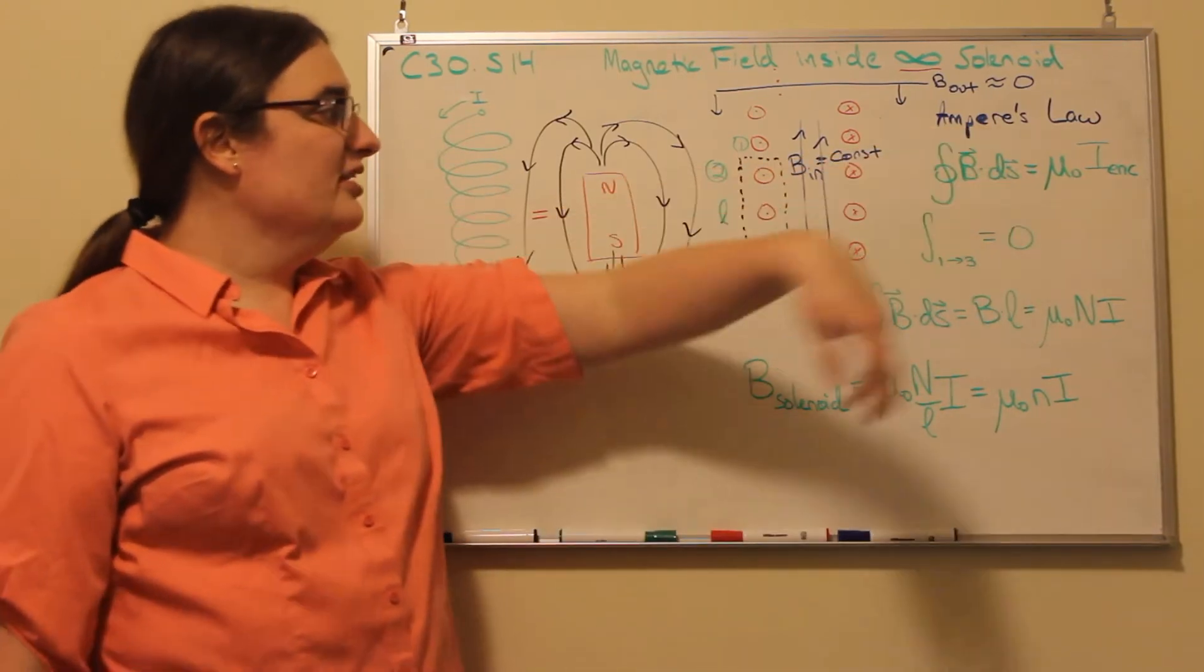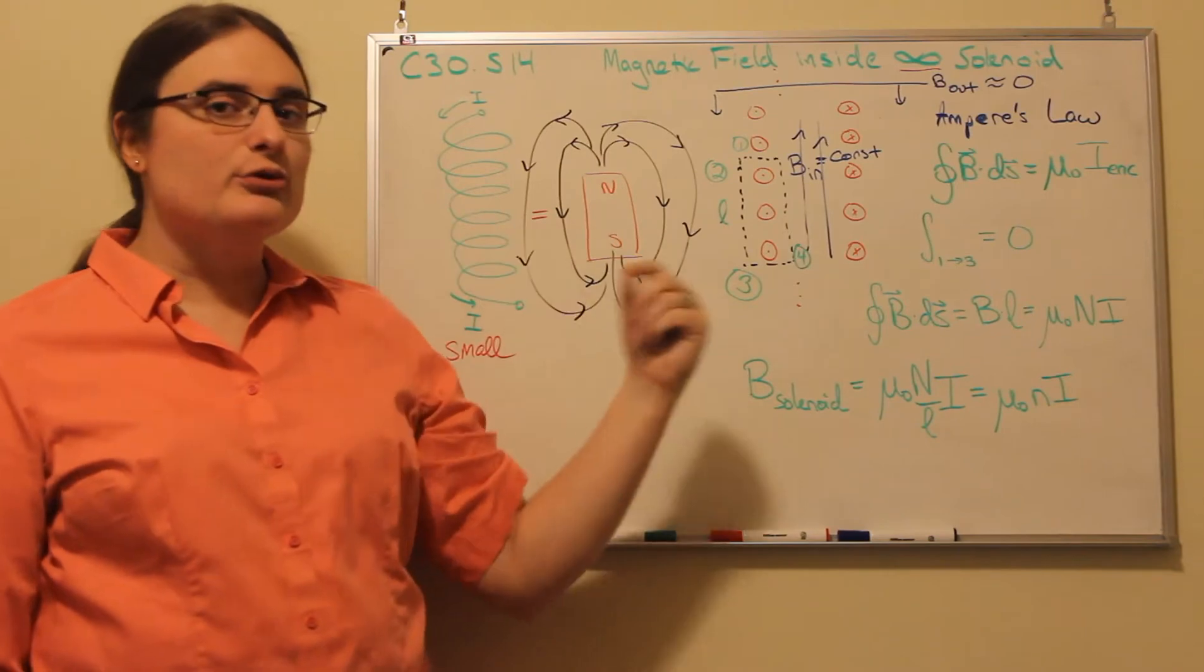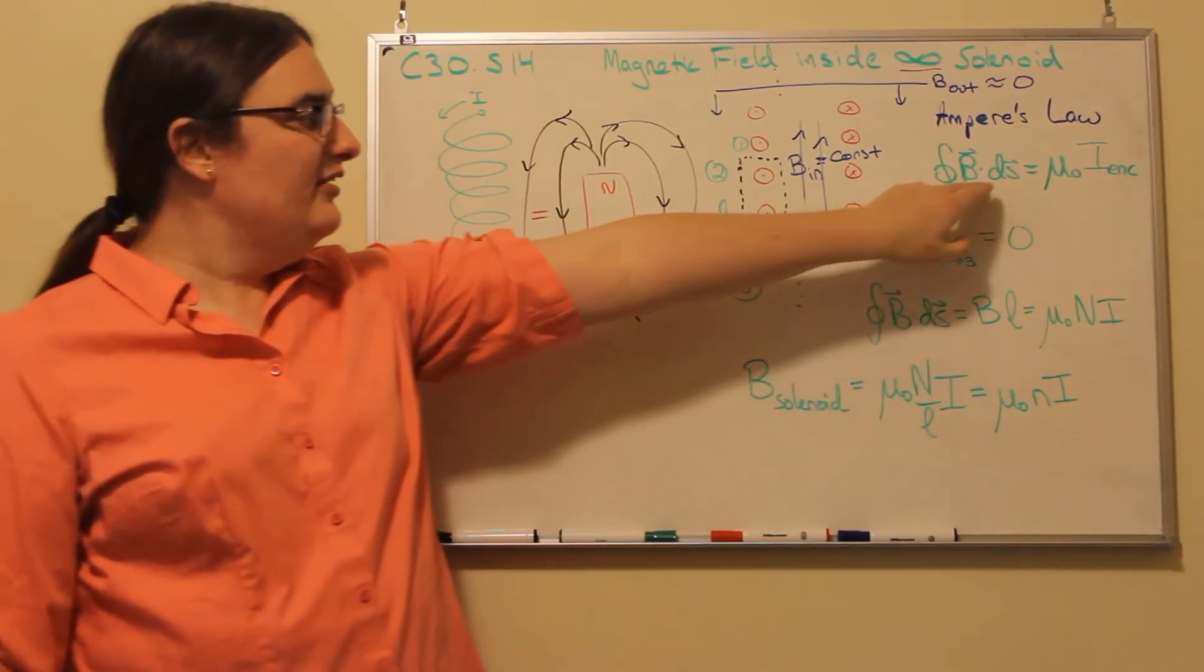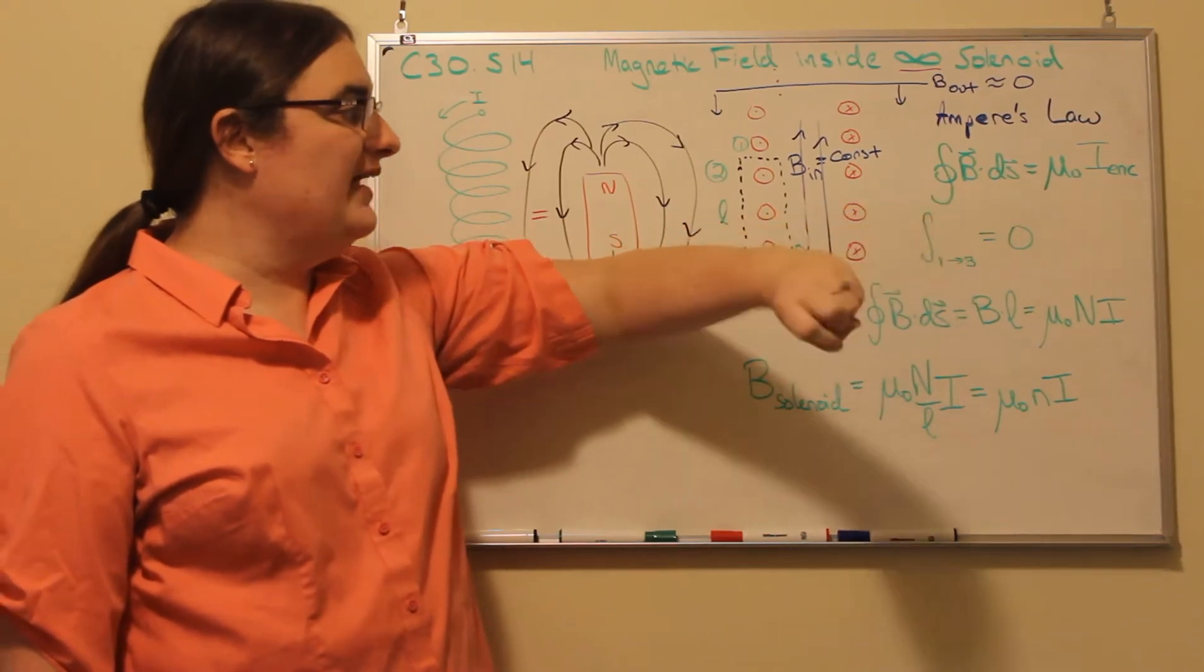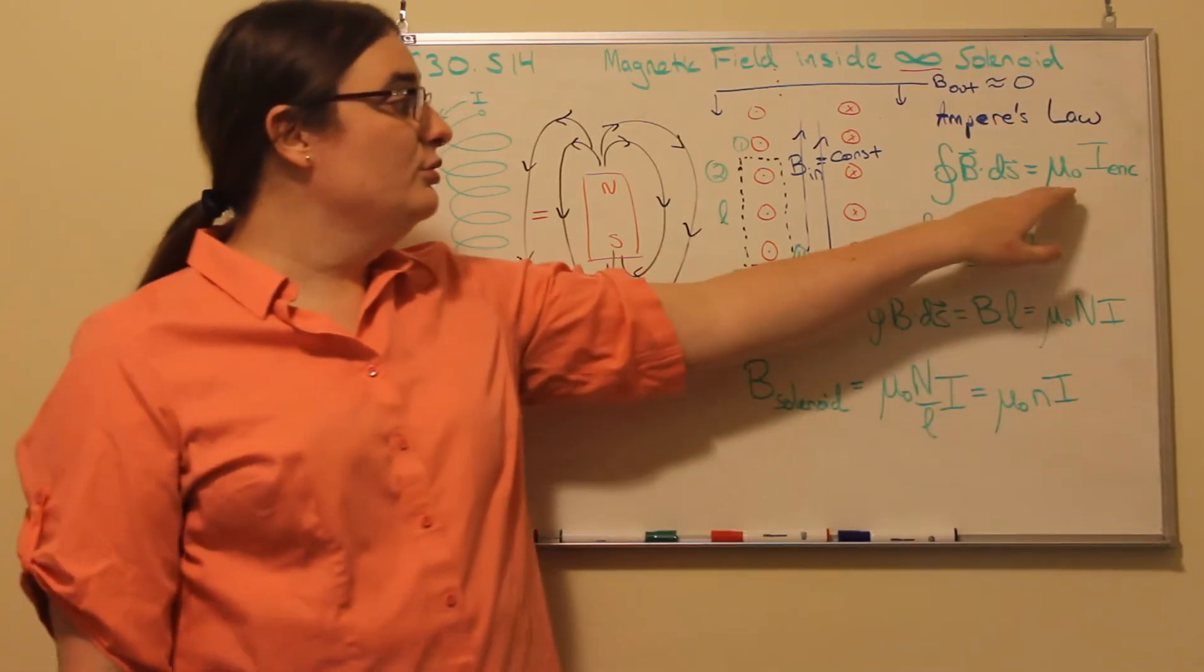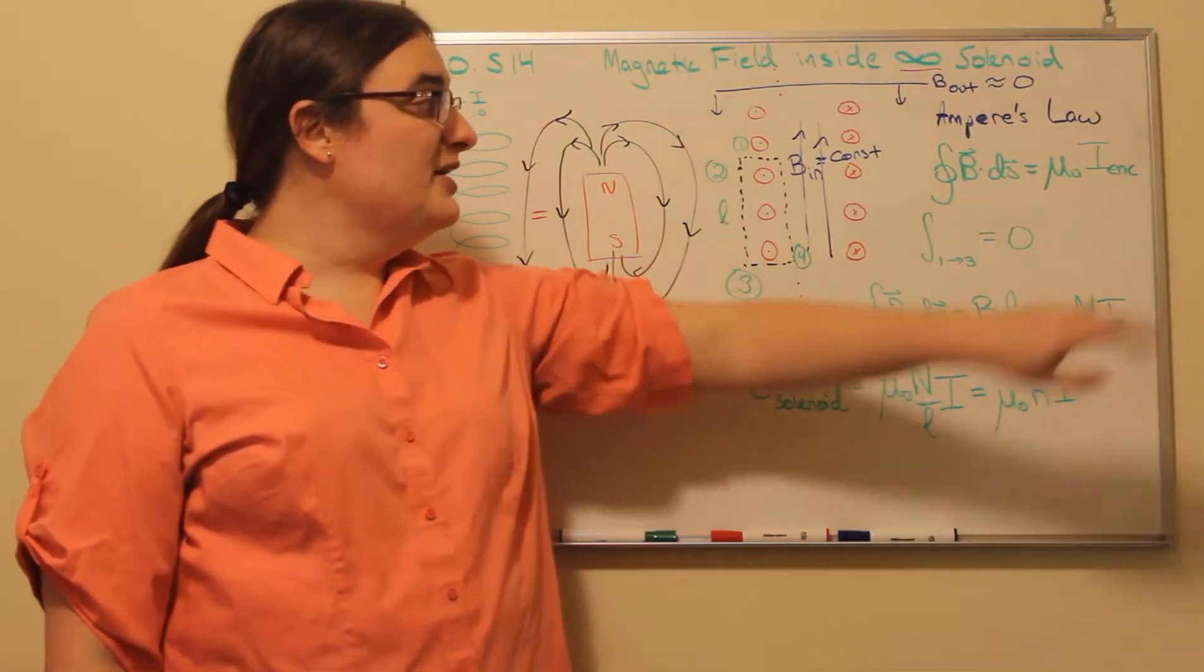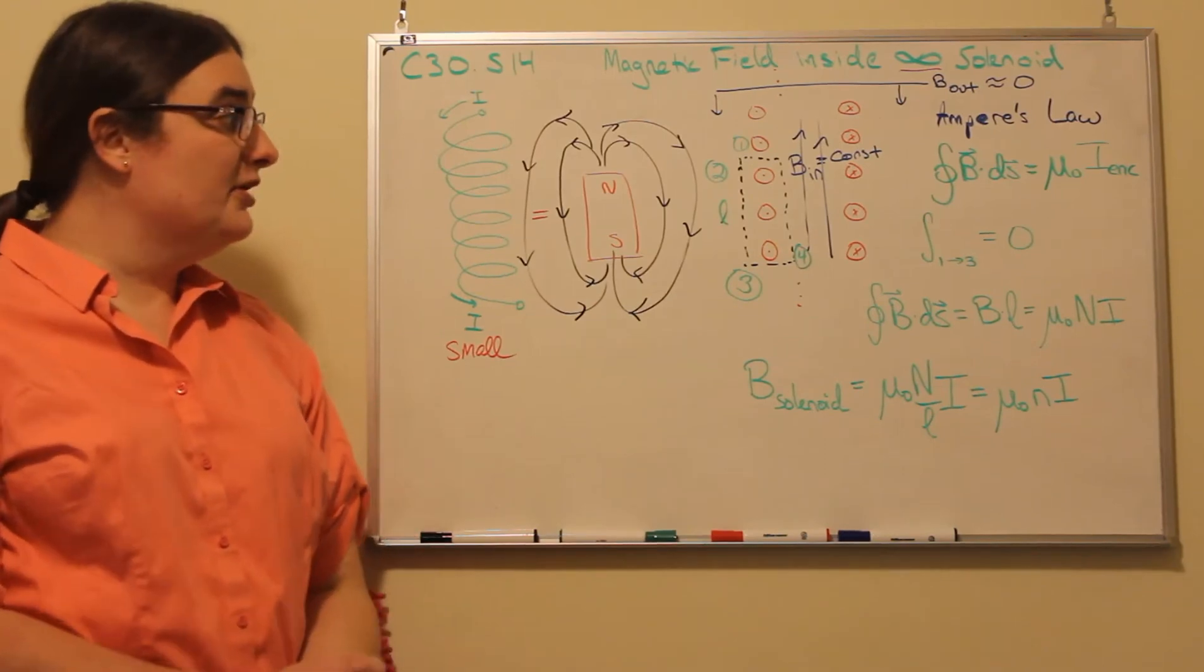Ampere's Law tells us that if we can find some path through space where we can calculate the magnetic circulation, the closed integral of the magnetic field dotted with some path integral, that's going to be equal to the permeability of free space mu-naught times the current enclosed by that Amperian loop.